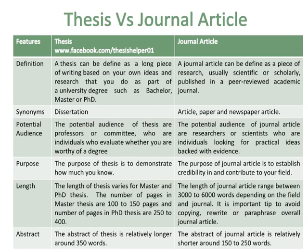The length of a thesis varies for Master and PhD theses. The number of pages in a Master thesis are 100 to 150 pages, and the number of pages in a PhD thesis are 250 to 400 pages, while the length of a journal article ranges between 3,000 to 6,000 words depending on the field and journal.